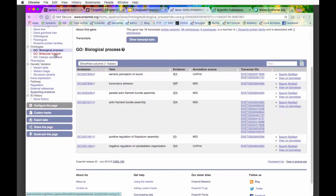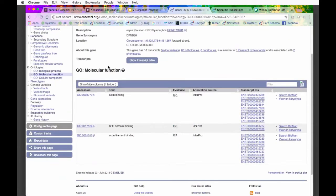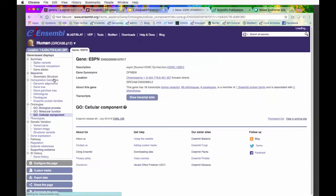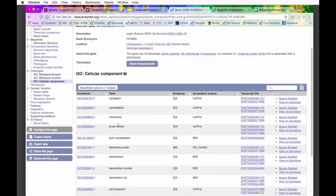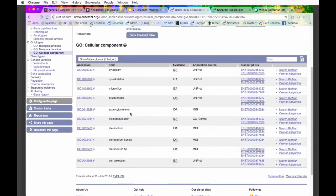We've also got molecular function and cellular components. GO has three categories. Biological process is what it does. Molecular function, if I click on that, is how it does it—it does it by binding actin. Cellular component is where it does it in the cell. In the cytoplasm, in the microvillus, things like that.